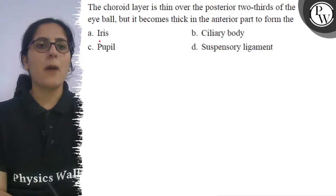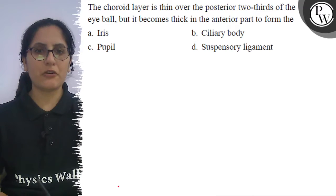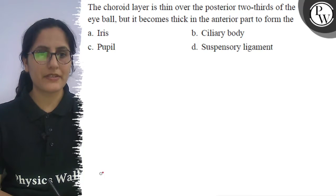to form the: option A iris, option B ciliary body, option C pupil, and option D suspensory ligaments.